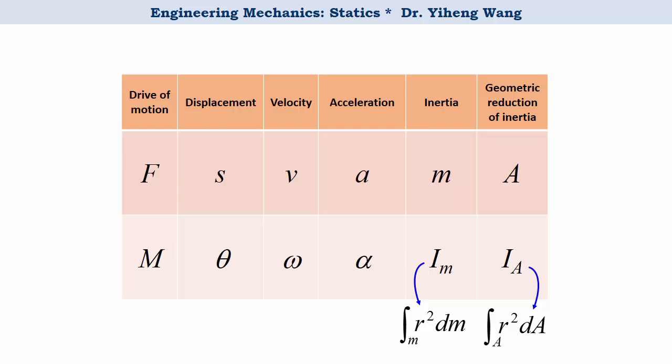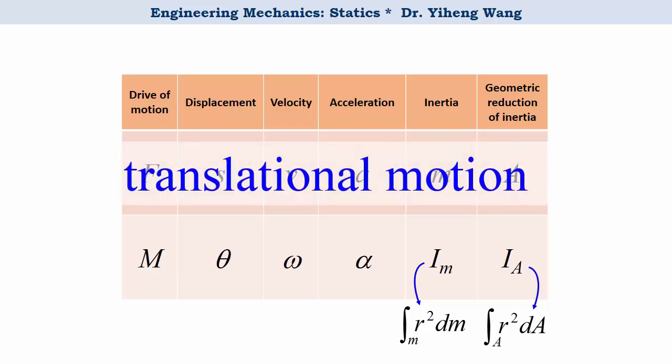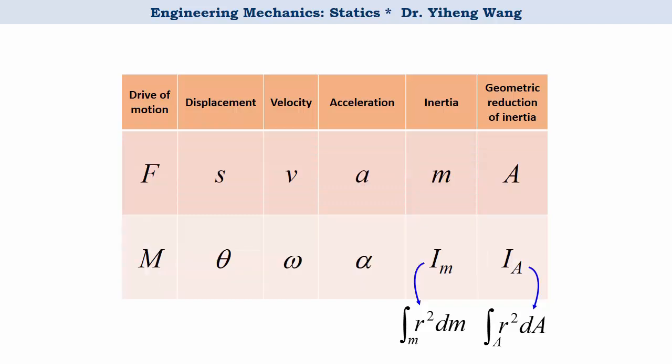The first row of this table deals with translational motion, and the second row deals with rotational motion. For the driving force, we have force versus moment of the force. For displacement, we have linear displacement s versus angular displacement theta, which is an angle. For velocity, we have linear velocity v versus angular velocity omega. For acceleration, we have linear acceleration a versus angular acceleration alpha. For inertia, or resistance to motion, we have mass versus mass moment of inertia. And lastly, for the 2D geometric reduction of inertia, we have area versus area moment of inertia. Hopefully this table can help you better understand the concepts of moments of inertia.